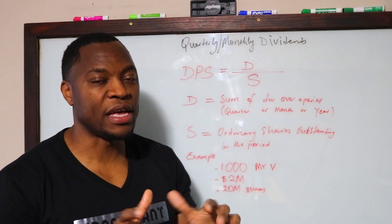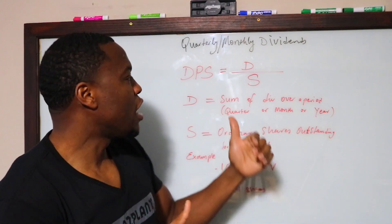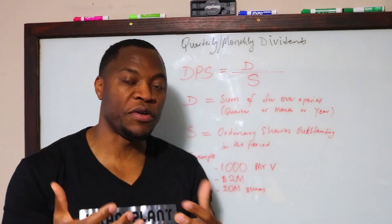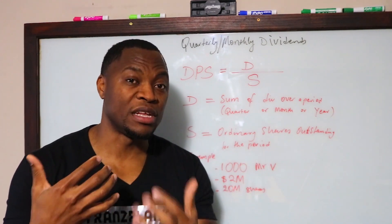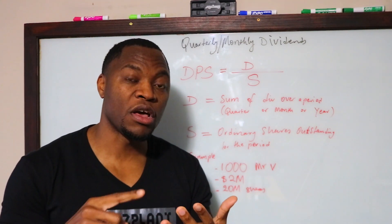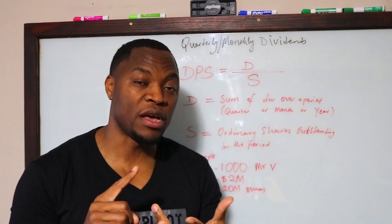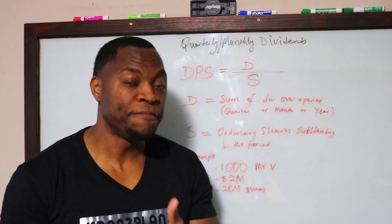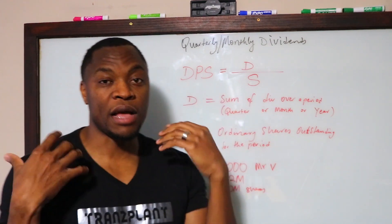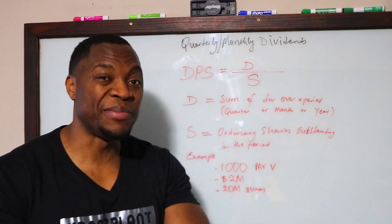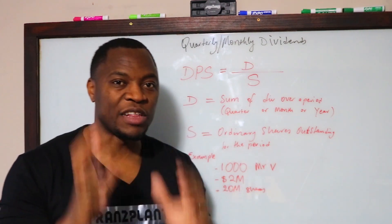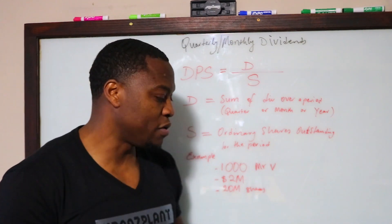Again, it's just the sum of the dividends over a period that the company is going to pay out — monthly, quarterly, or annually — divided by the outstanding number of shares. I'm going to use a simple example here that will explain this better.